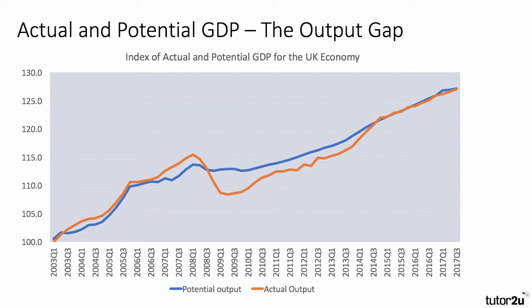Output then spends a long time below potential. A big problem for policymakers such as the Bank of England is that the level of potential output is not something we can actually measure directly, which makes it very hard to measure the output gap.